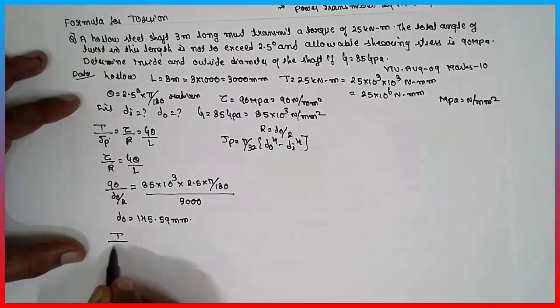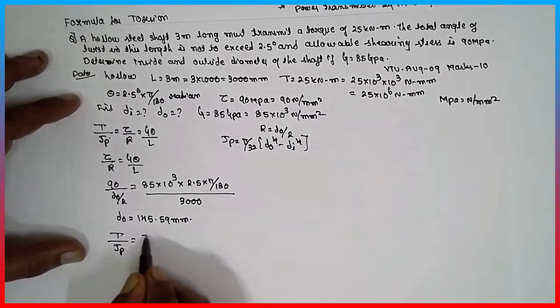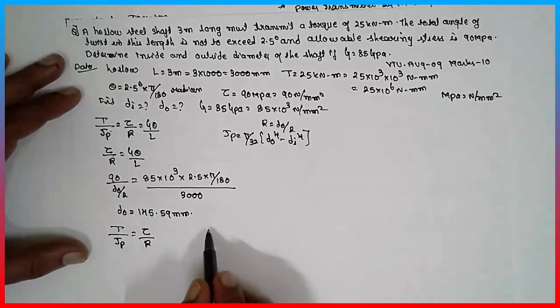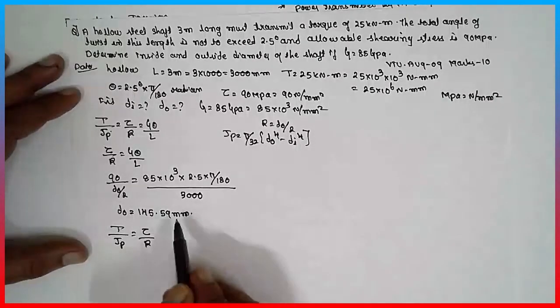See here, T divided by Jp is equal to tau divided by R, where R is nothing but D naught by 2. D naught, we have obtained it.